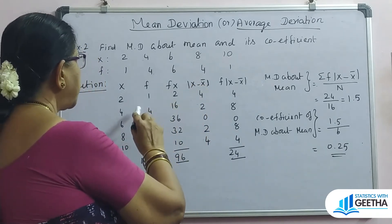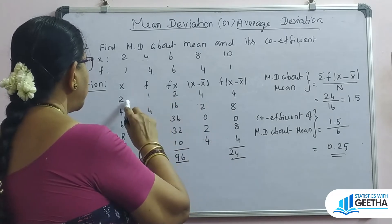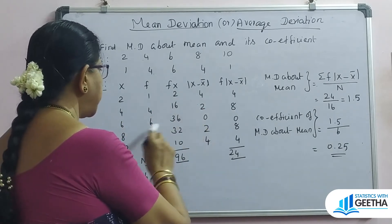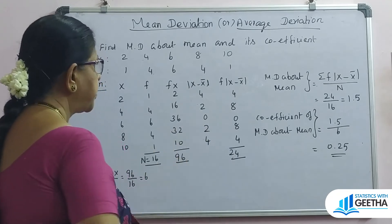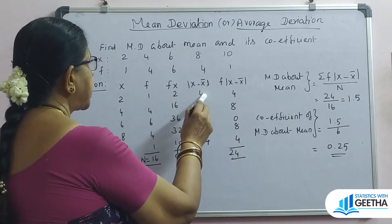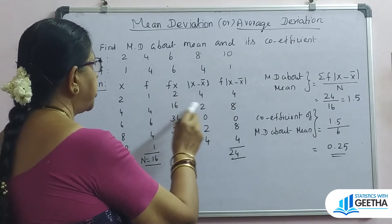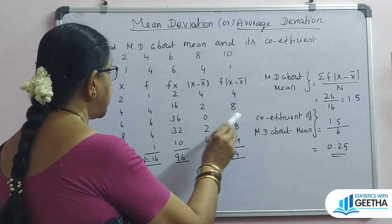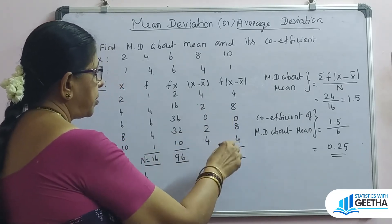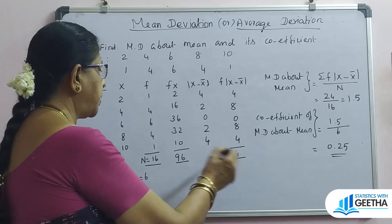Calculating deviations from mean (x-bar = 6): |2−6|=4, |4−6|=2, |6−6|=0, |8−6|=2, |10−6|=4. All absolute values are positive. Now multiply f into mod(x minus x-bar): 1×4=4, 4×2=8, 6×0=0, 4×2=8, 1×4=4. The total summation of f×mod(x minus x-bar) equals 24.